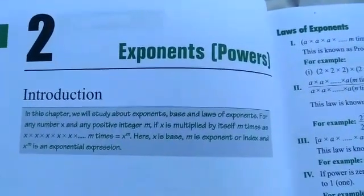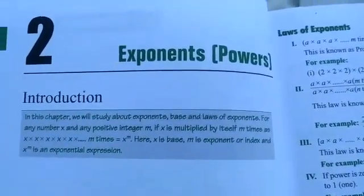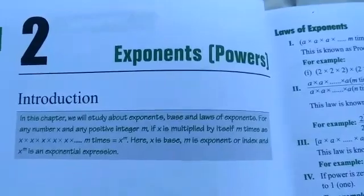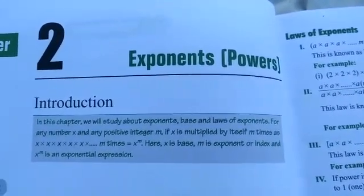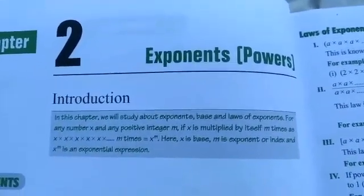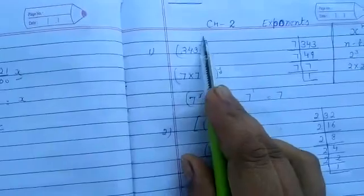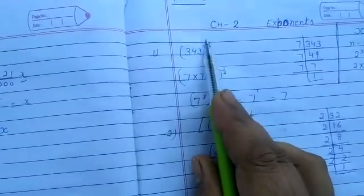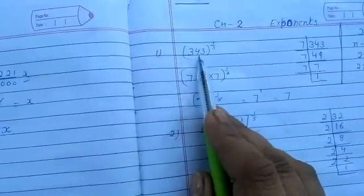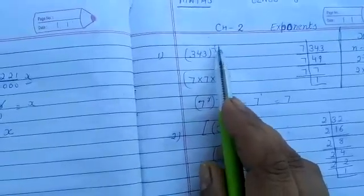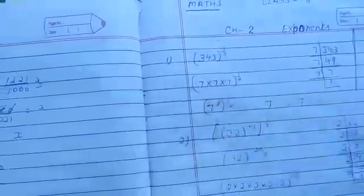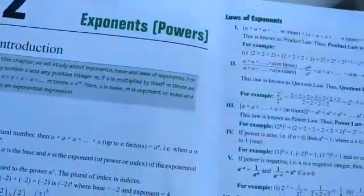Good morning students, myself Sitnam. Today we are going to start Chapter Number 2: Exponents and Powers. What is the meaning of it? That means there is something raised to a power — like some number has a small number above it. For example, 343 raised to the power 1/3. Before starting, we have to see some laws of exponents.